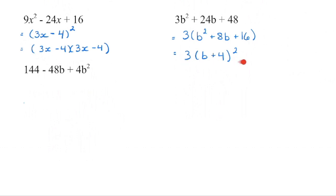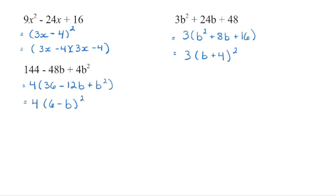For the grand finale: first check for a greatest common factor — we can remove a 4 from each term. Then check if it's still factorable — this is a perfect square, this is a perfect square, and the middle term confirms it. Square root the first term, square root the last term, and the sign matches the middle. Always check: 6 squared is 36, double the product gives negative 12b, and negative b times negative b is positive b squared. Distribute the 4 back in to return to the original trinomial. Remember: when you factor, you are creating the brackets; when you expand, you are eliminating them.